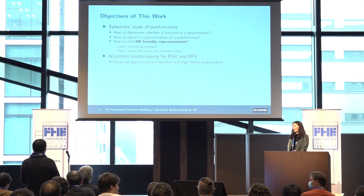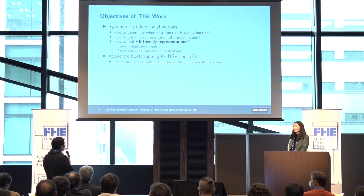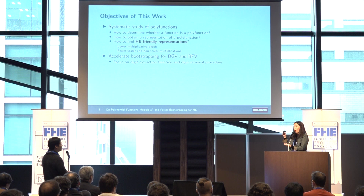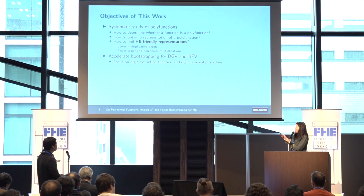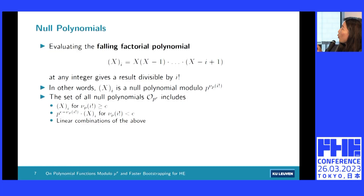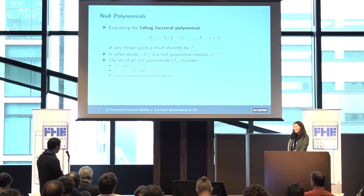Q: Is it possible to extend this result to the non-prime-power case, i.e., composite modulus? A: This work has already been done by other mathematicians. They have shown how to consider null polynomials modulo a composite number. The idea is the same: for composite polynomials, we just need to ensure each prime factor yields a null polynomial, and then it will be null modulo the composite modulus. That is the state-of-the-art result for composite moduli.